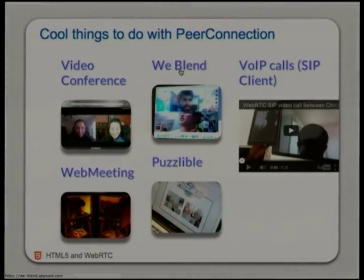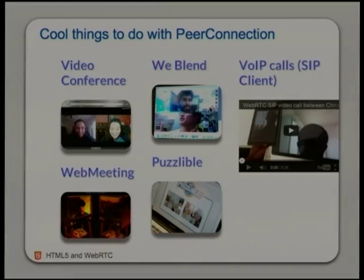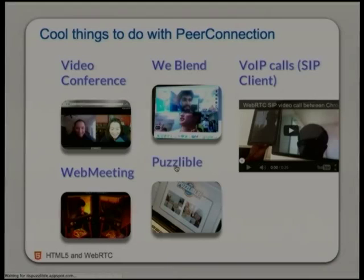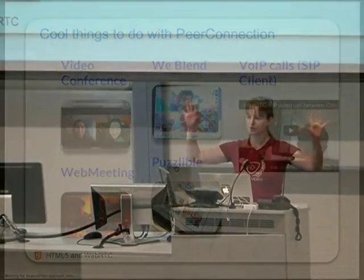Other people have done some funky stuff with peer connections. This one is called WeBlend — it puts two connections together on one screen, one on top of the other, blended so that the top half is from you and the bottom half is from your peer, making it look like one person. This one called Puzzlable uses video from both ends and makes little puzzles — you have to reassemble your own video with your mouse, and if you're faster than the other side you win.